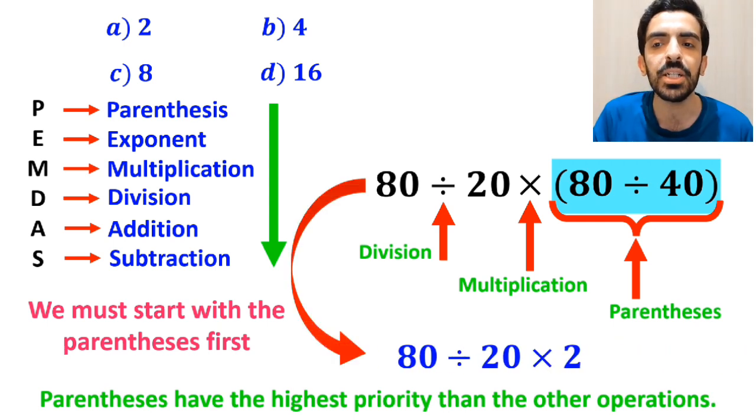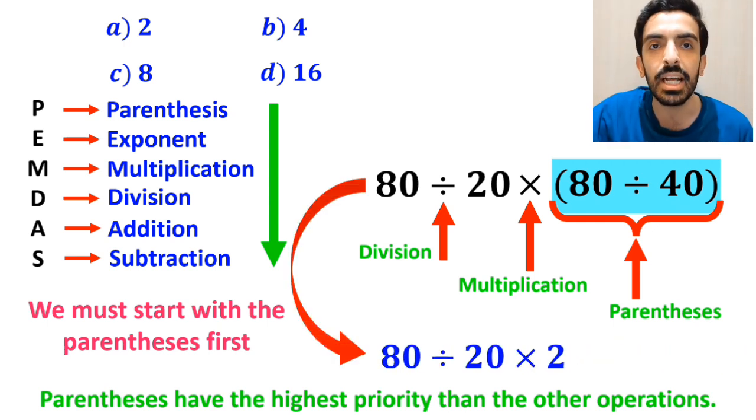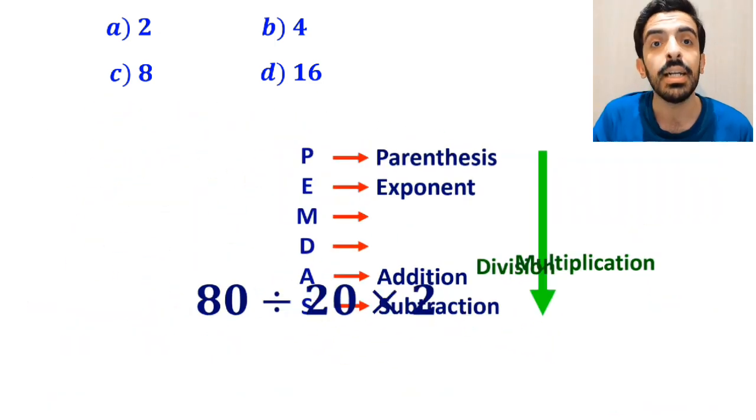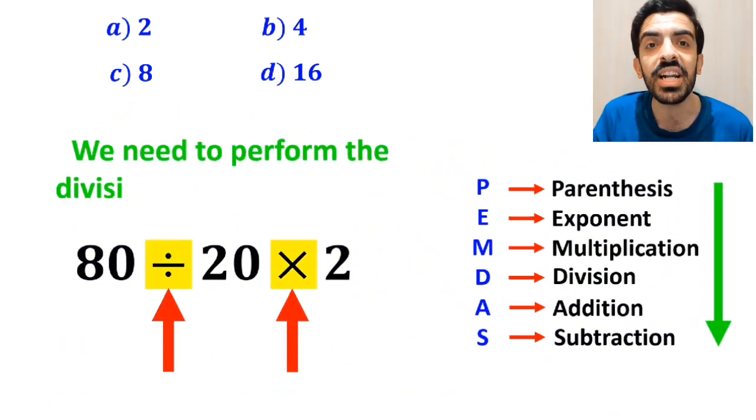So we can rewrite this expression as 80 divided by 20 then multiply it by 2. Now, we need to perform the division and multiplication.